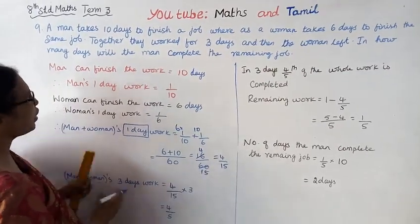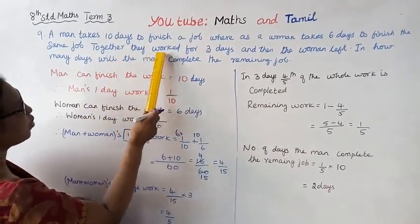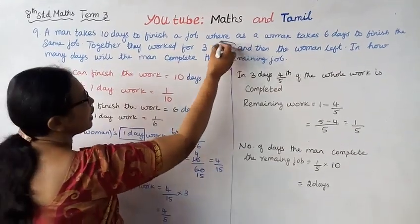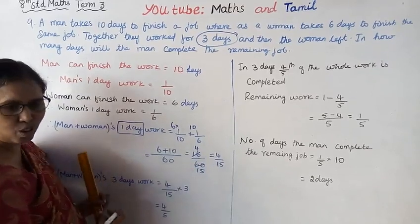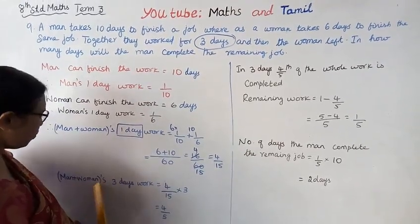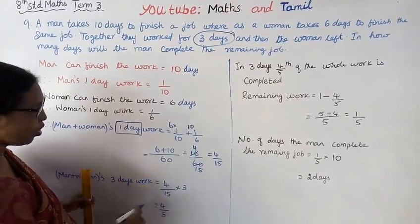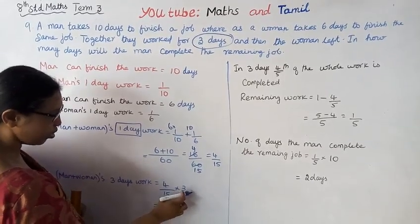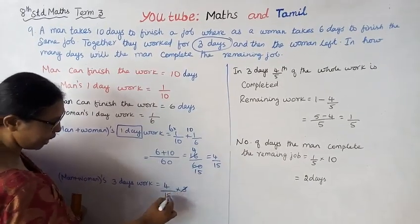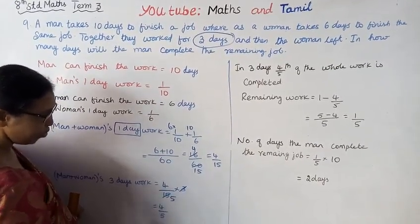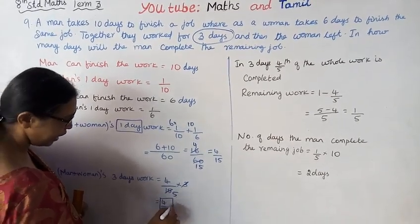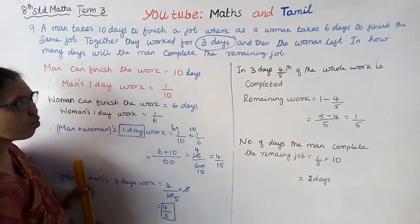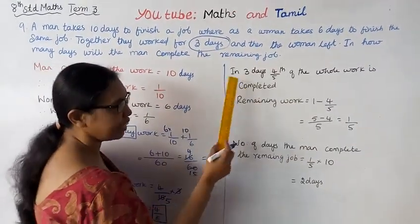Together they work for three days. One day work is 4/15, so three days work is 4/15 times 3. Simplifying, 3 times 5 is 15, giving us 4/5.